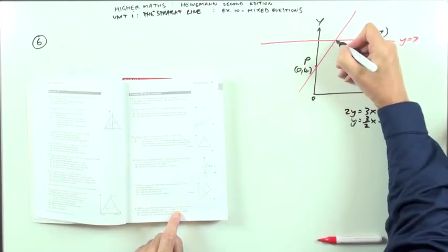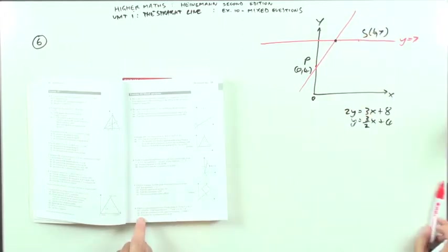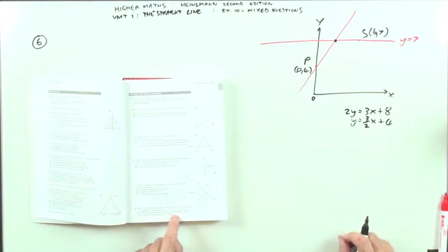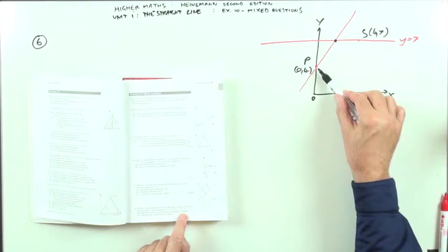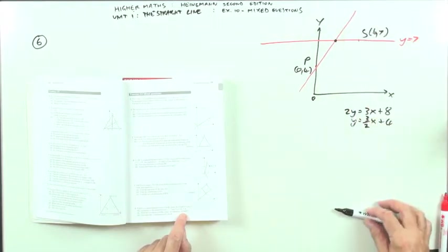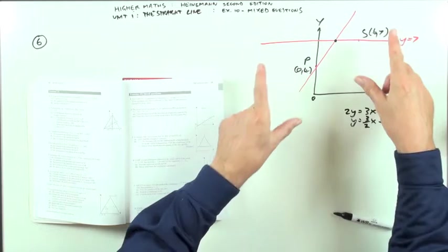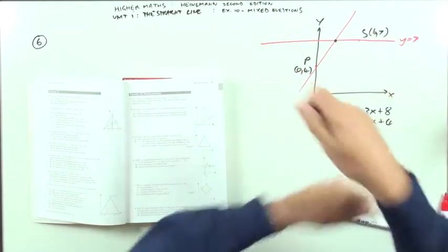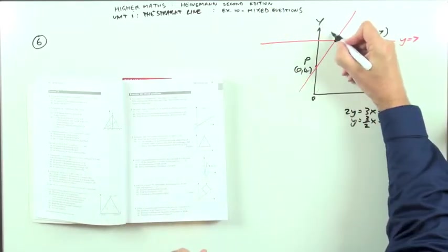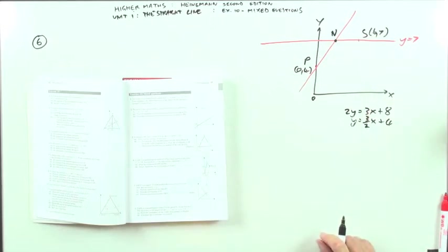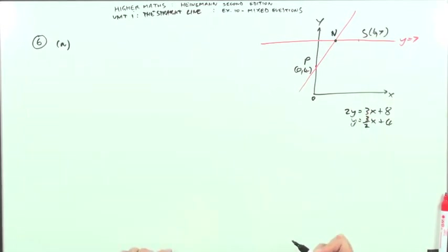So they cross here. First of all, find the coordinates of the centre of symmetry of the parallelogram PQRS. Well the centre of symmetry means the parallelogram has got half-turn symmetry, so the centre of symmetry will be where the two diagonals cross.